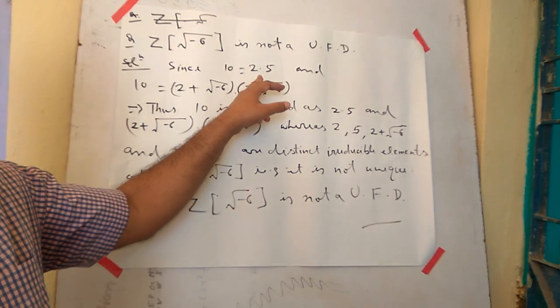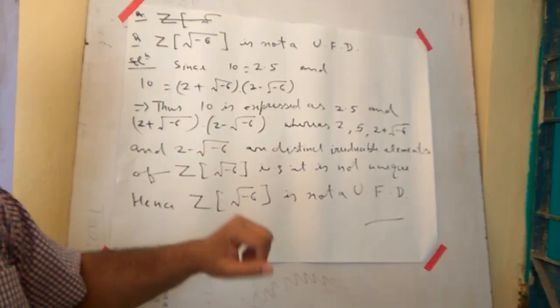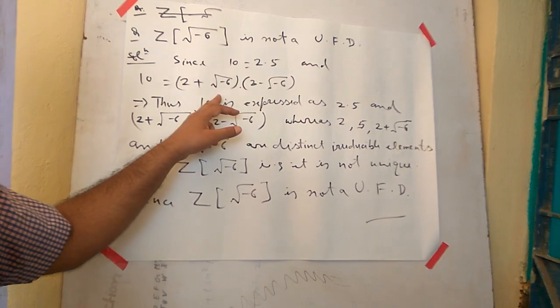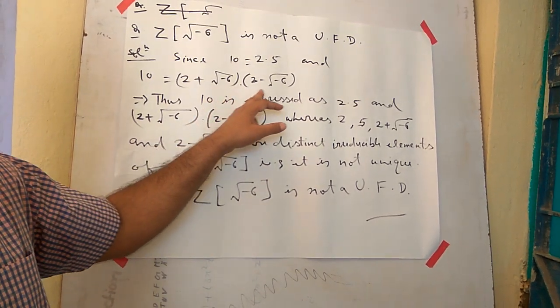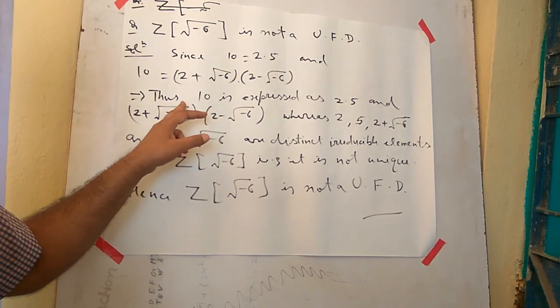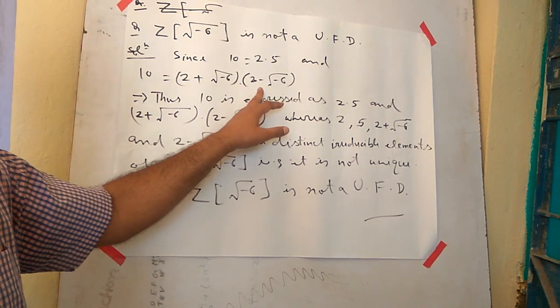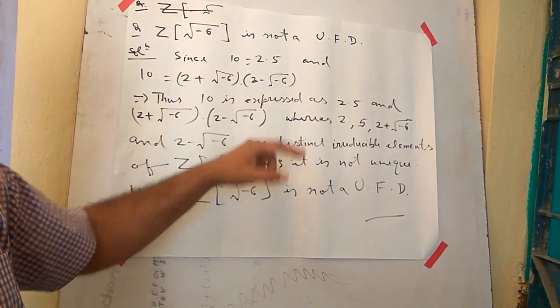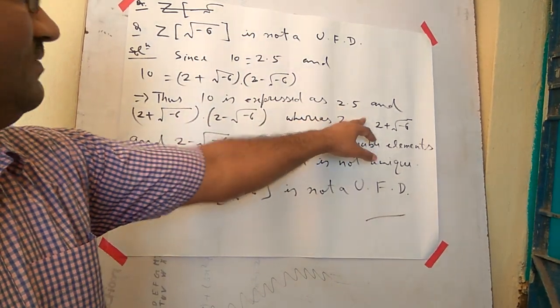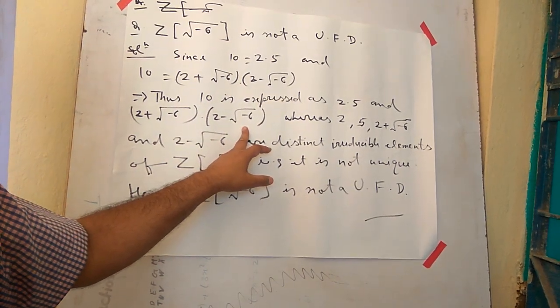We know that 10 can be written as 2 into 5. 10 is a real number, 2 and 5 both are real numbers. And also 10 can be written as (2 + √-6) into (2 - √-6). Thus we have represented 10 in two different ways: 10 is expressed as 2 into 5, and (2 + √-6) into (2 - √-6).